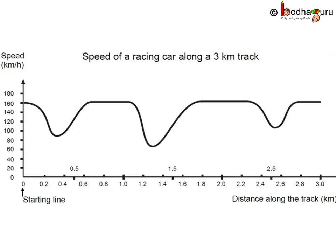What does this graph say about the shape of the racing track? Can we draw the shape of the racing track from this speed-distance graph? Let's look at it.